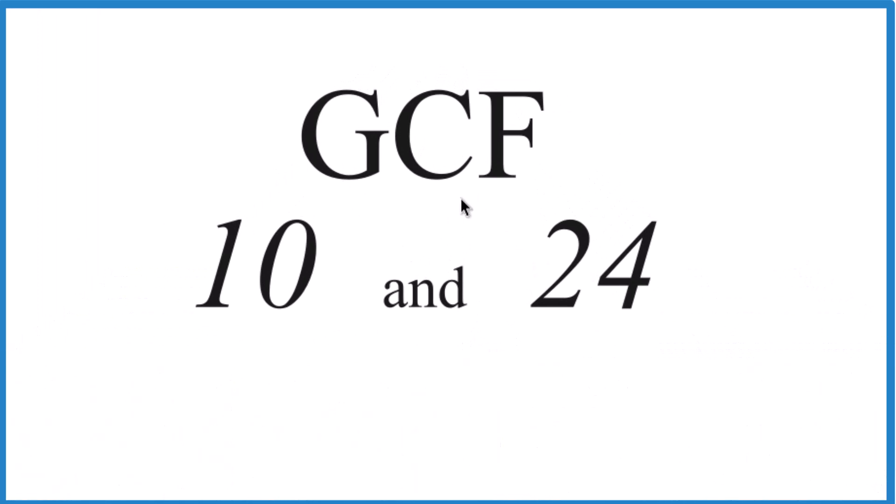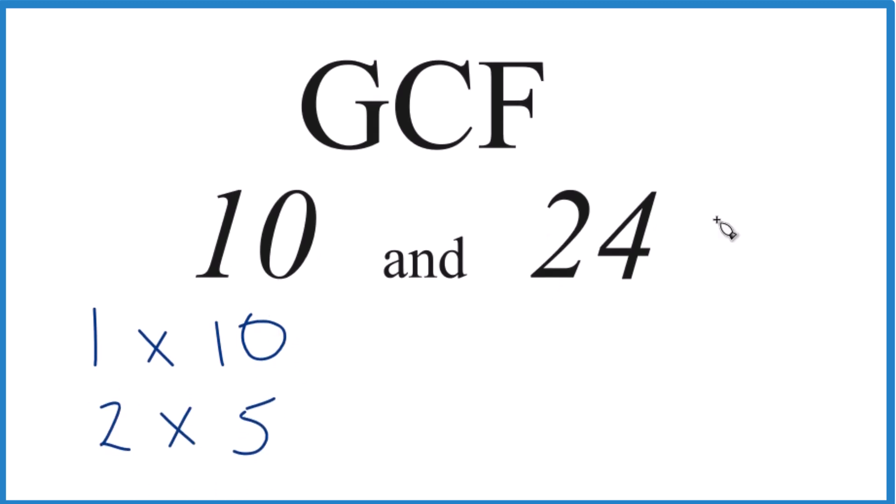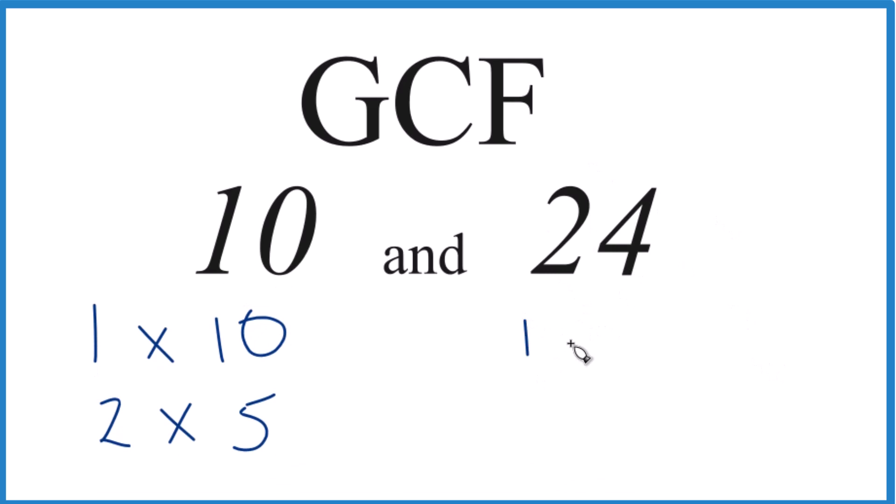For the GCF of 10 and 24, we find the factors of 10 and 24, find the factors that are in common, and then choose the greatest one. For 10: 1 times 10, that's 10; 2 times 5. I think that's it. For 24, we could have 1 times 24...